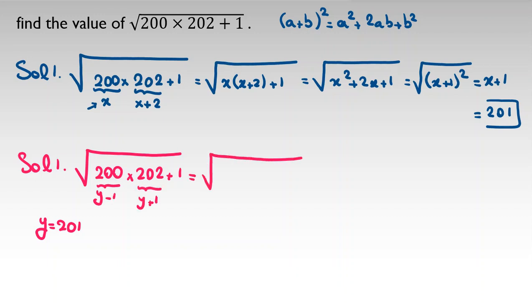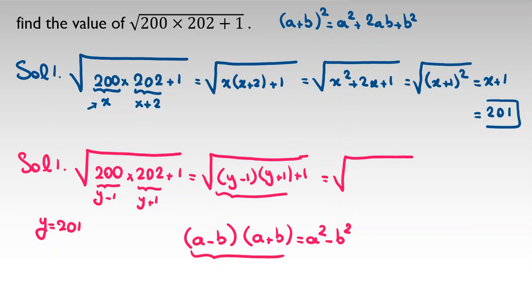So I have y minus 1 times y plus 1 plus 1. We have a famous identity that a minus b times a plus b equals a squared minus b squared. If I apply this here, a is y, b is 1. A squared minus b squared will be y squared minus 1 squared plus 1.